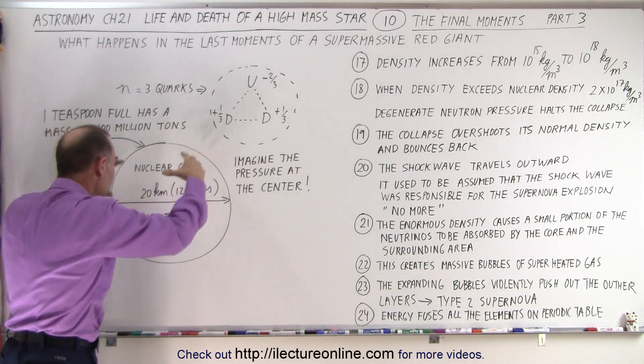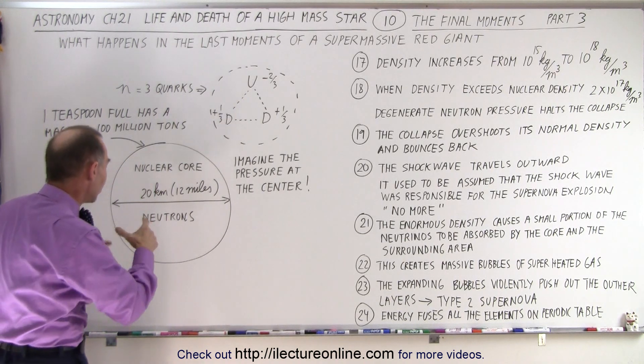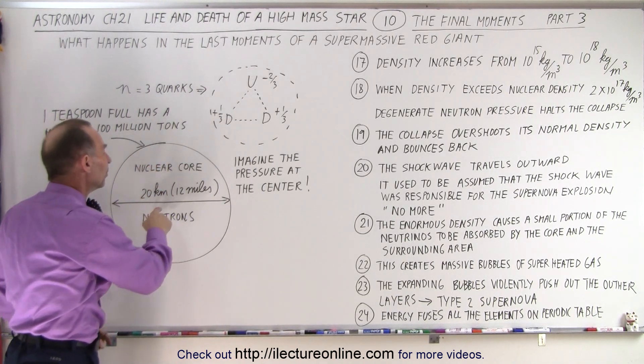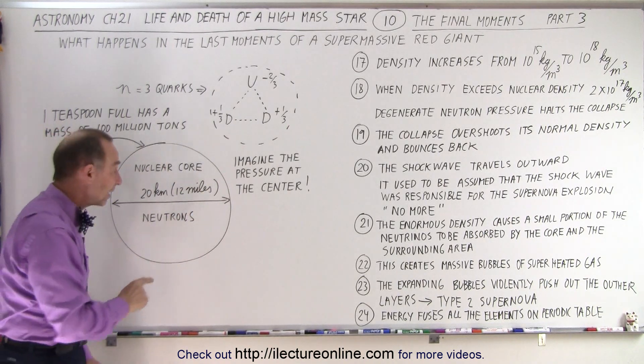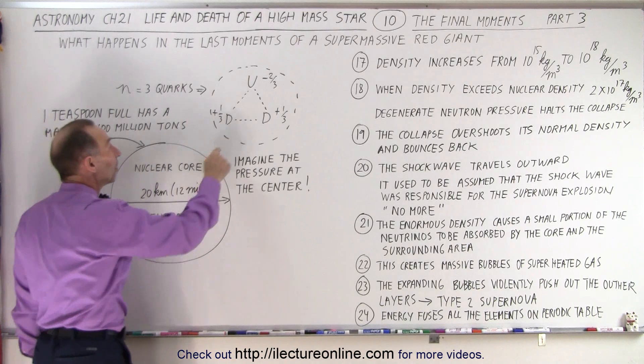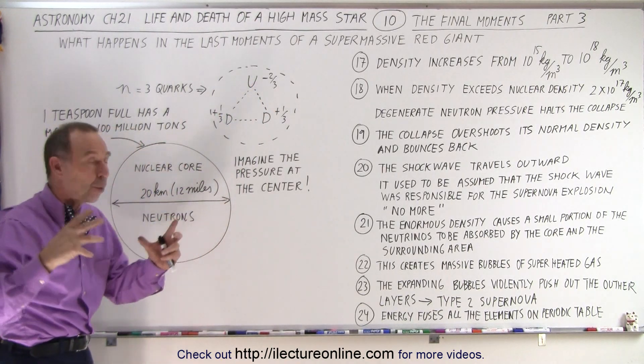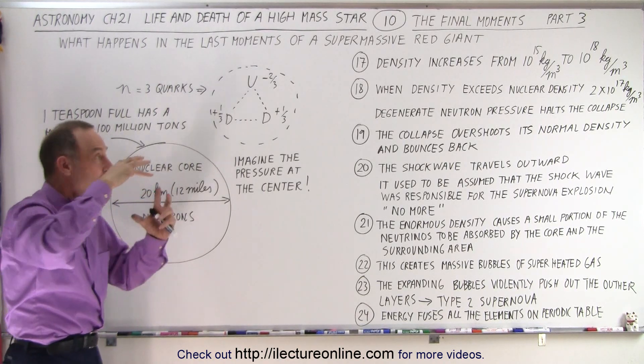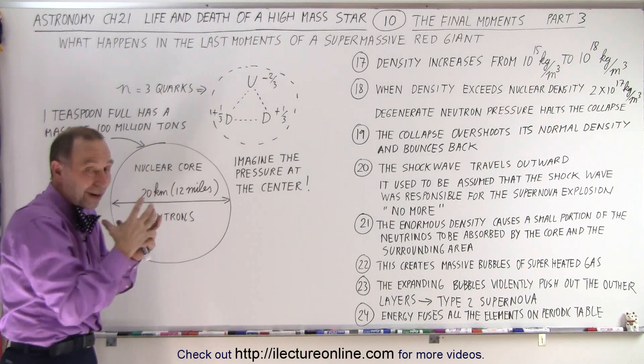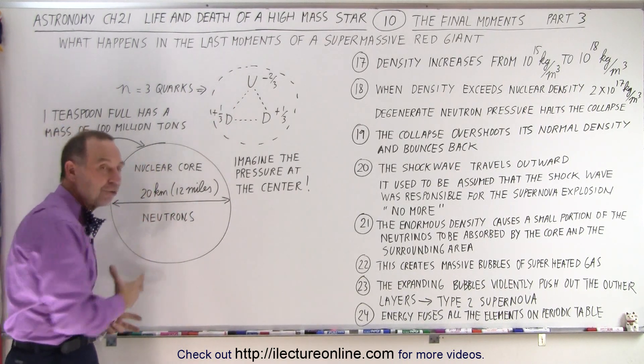Imagine a small little teaspoonful having a mass of 100 million tons. Imagine the enormous pressure at the very center of this nuclear ball. The gravitational forces there would be absolutely unbelievable. And notice that this is a ball of neutrons.